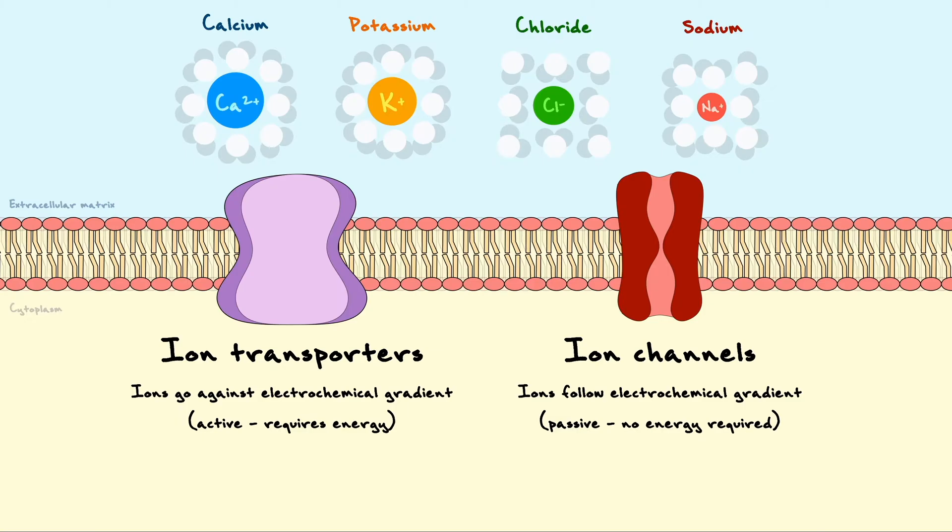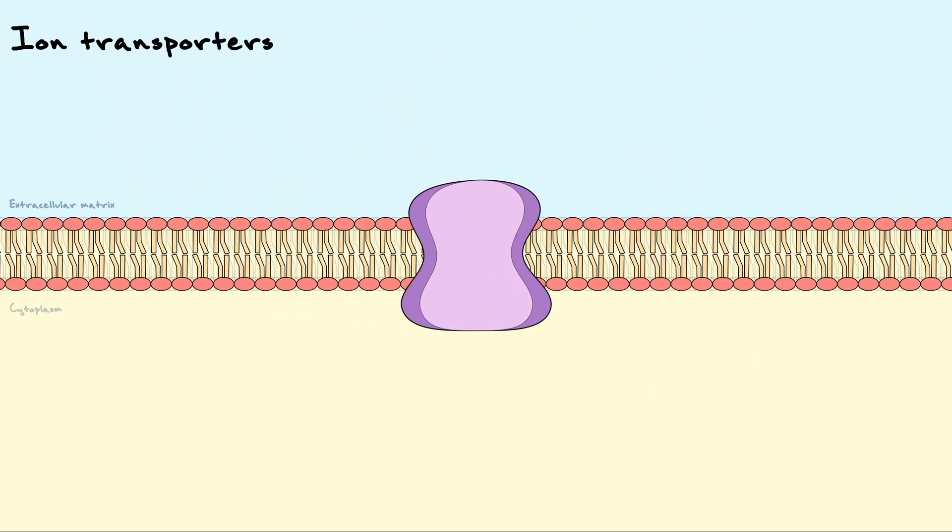In summary, ion transporters, regardless of how they get their energy, are very important proteins that allow the generation and the maintenance of electrochemical gradients. Now, back to the membrane, let's quickly summarize what we've established.